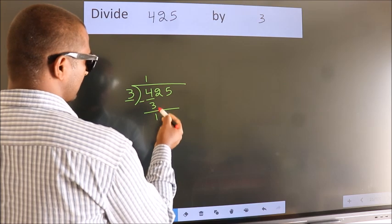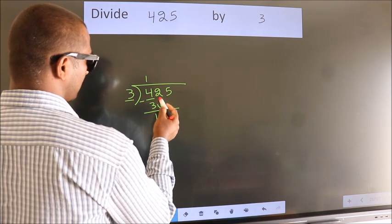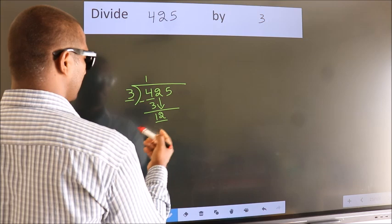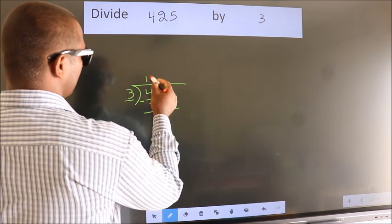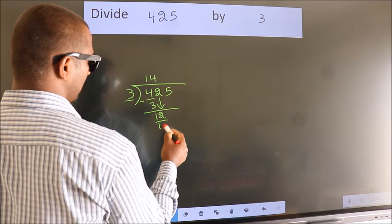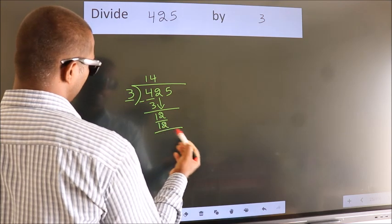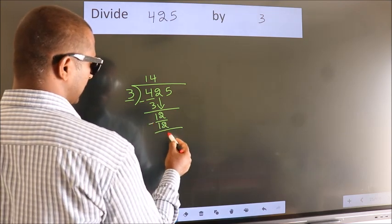After this, bring down the beside number. So 2 down. So 12. When do we get 12? In 3 table, 3 fours 12. Now we subtract. We get 0.